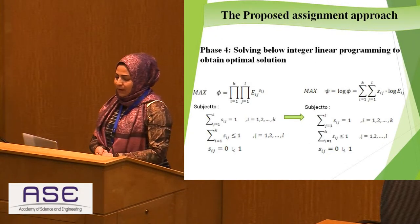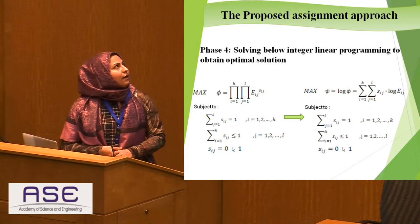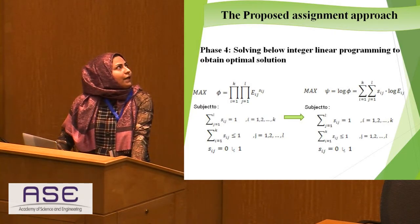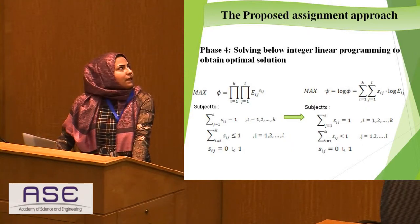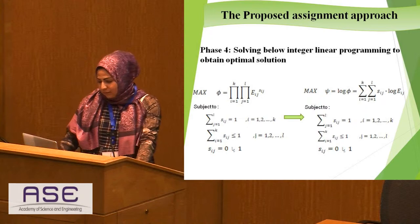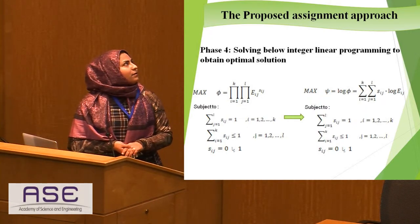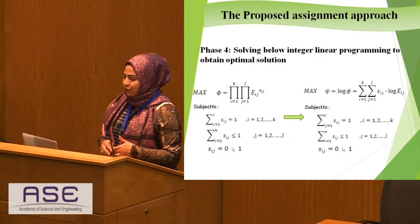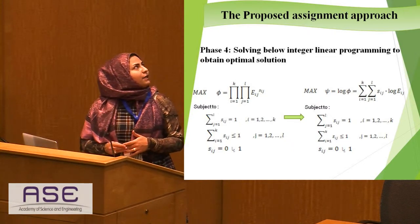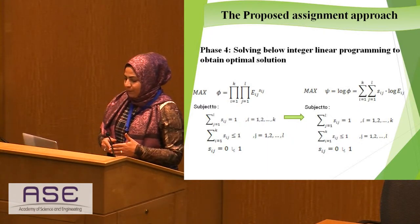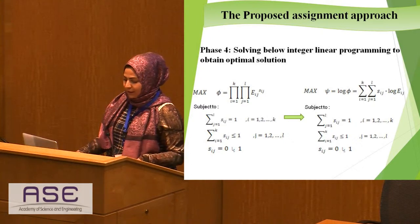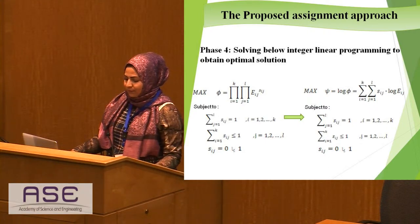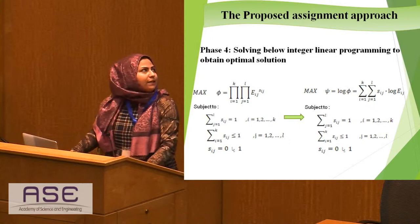Finally, we formulate the problem as a nonlinear programming problem using this efficiency index. Since all E_ij are between 0 and 2, and the S_ij are 0 or 1, we can conclude that the objective function F is greater than 0. By calculating the logarithm of the target function, we can convert the above nonlinear problem into a linear program.